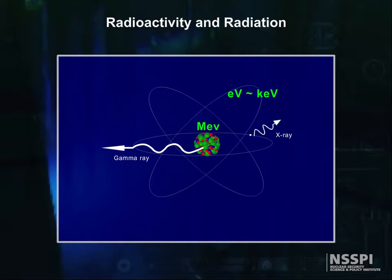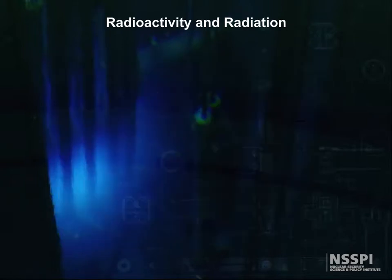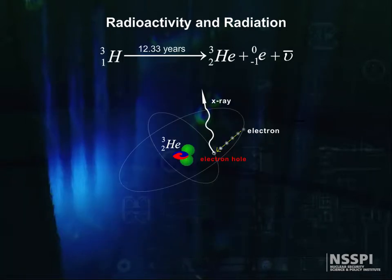X-rays almost always appear during nuclear decay also. There is still more to learn by looking at the tritium equation. When tritium decays, it goes from a hydrogen atom with one lonely electron to a helium atom with only one electron.